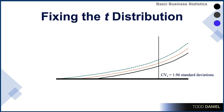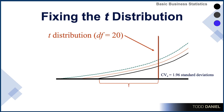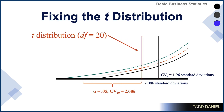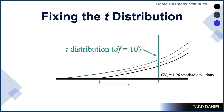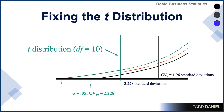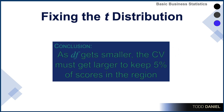Here's what Gossett did. For every sample size, he calculated a new value for 5%. For 20 degrees of freedom, the 1.96 would have to increase to 2.086 to keep 5% of the scores in the tail. For 10 degrees of freedom, the 1.96 would have to increase to 2.228 to keep 5% of the scores in the tail. The smaller the sample size, the greater the shift above 1.96.